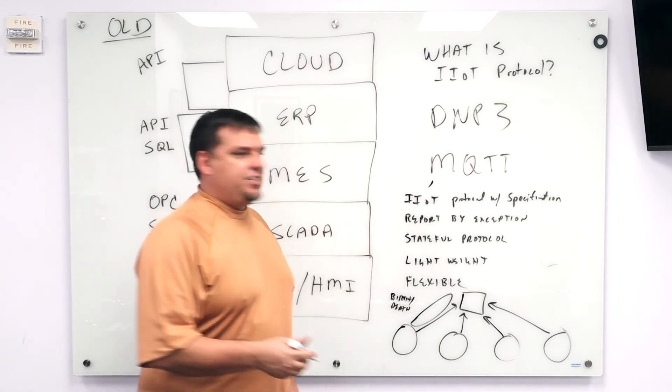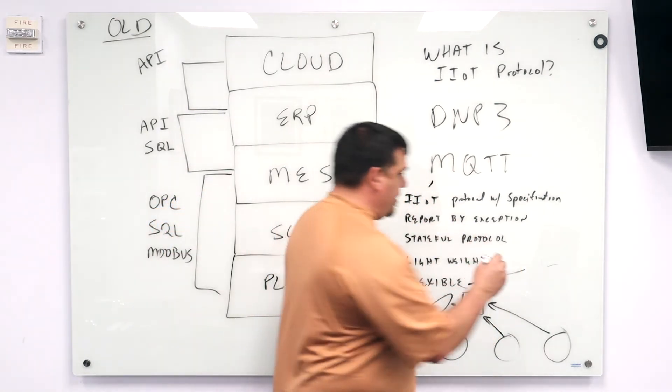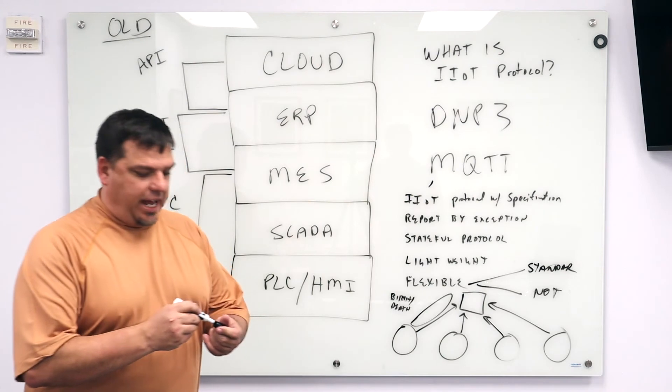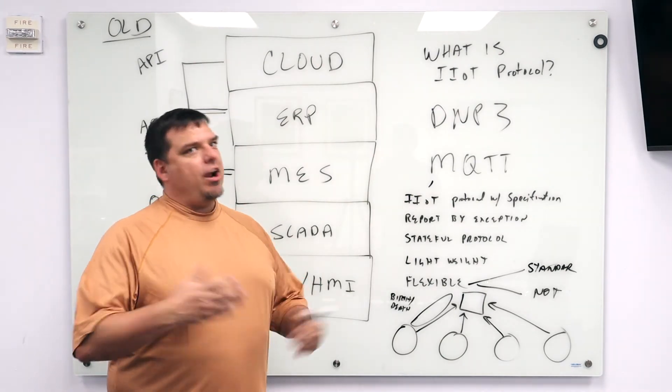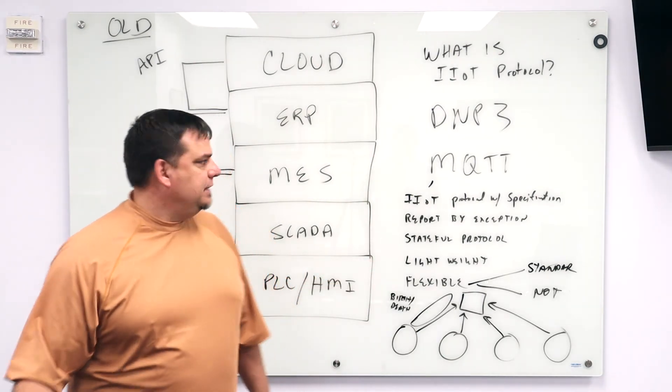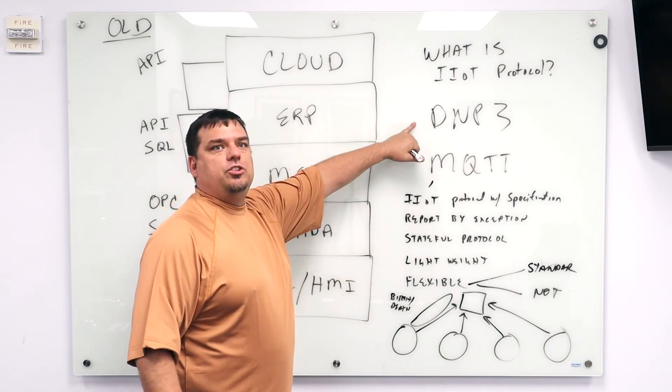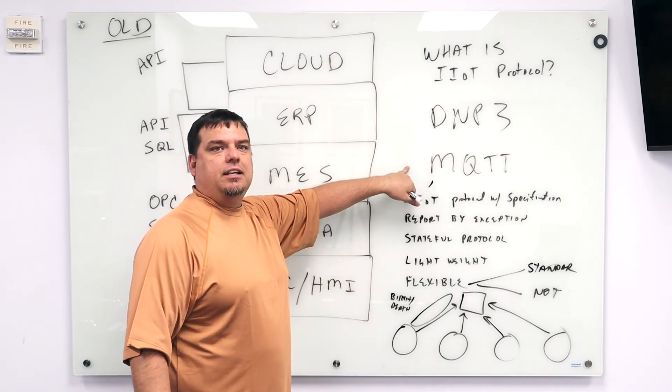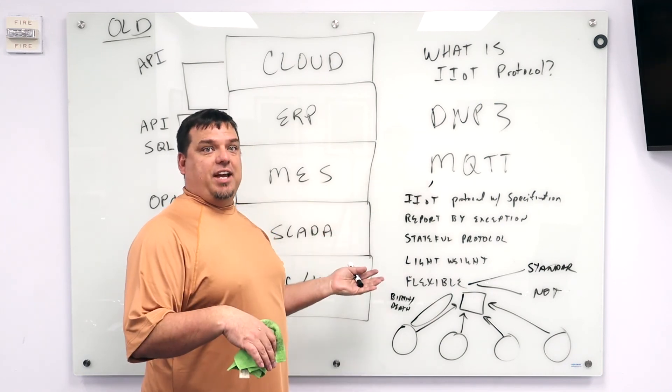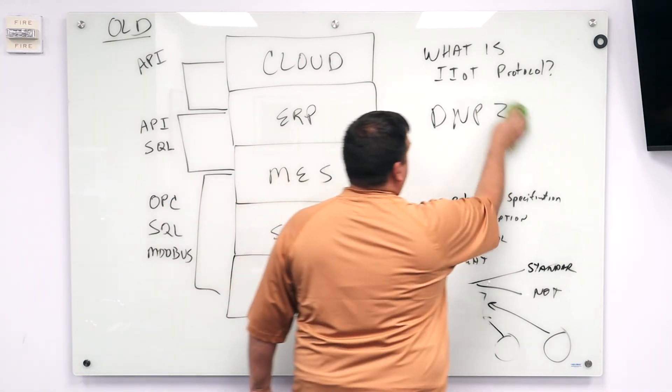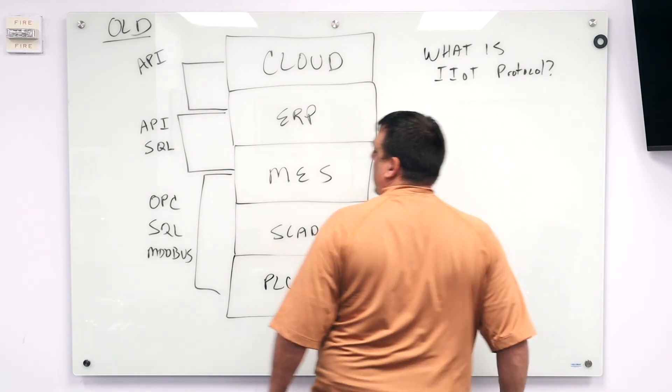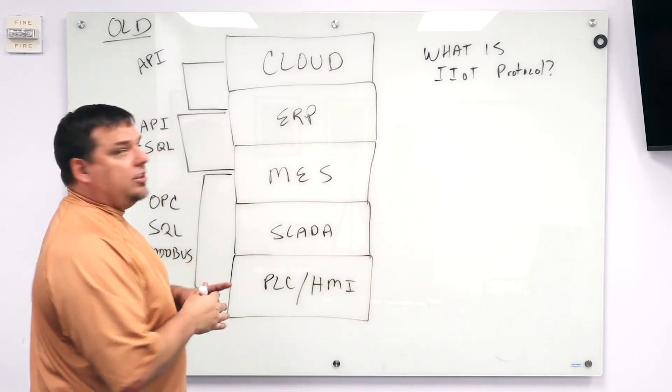And then flexible. Flexible means this. Our payload can be standardized or not. I could have a structure for my payload or I could not. That's what makes it flexible. In another video later on, not probably not in this set of videos, we'll do what is the difference between DMP3 and MQTT, disadvantages, advantages of the two. It starts with DMP3 is still a pole-based protocol. And then I want to talk a little bit about why MQTT matters.